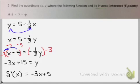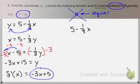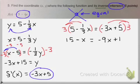If I want to find where the two lines intersect, I know that intersecting lines are equal at the point of intersection. So I'm going to set my original function equal to my inverse: 5 minus 1 third x equals negative 3x plus 5. It's helpful if you remember how to clear your fractions by multiplying every single term by your LCD, which is 3. Distribute it out to every single term, and your fractions disappear.